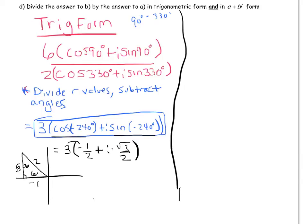And if we distribute, we get negative 3 halves and then 3 divided by 2, glue that I in there, root 3. You could also write that as negative 1.5 plus 1.5 I root 3. So maybe we'll leave it like that.